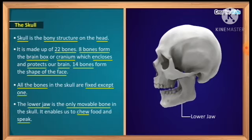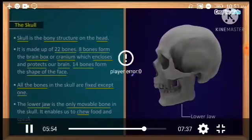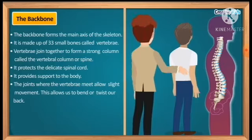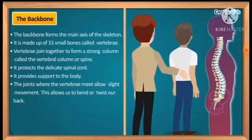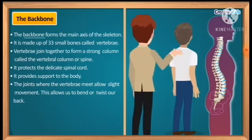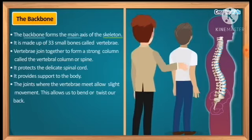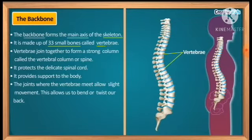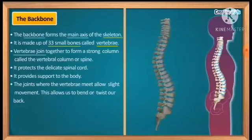Second: backbone or spine. The backbone forms the main axis of the skeleton. If you touch your friend's back from top to bottom in the center, you will feel a hard structure — that is the backbone. It is made up of 33 small bones called vertebrae. These vertebrae join together to form a strong column called the vertebral column or spine.